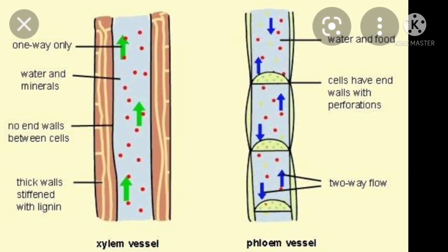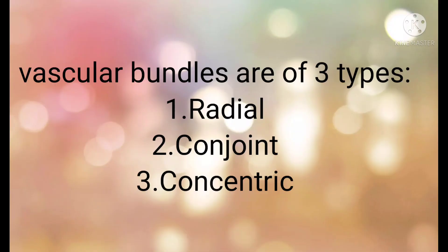Vascular bundles are of three types: radial, conjoint, and concentric.